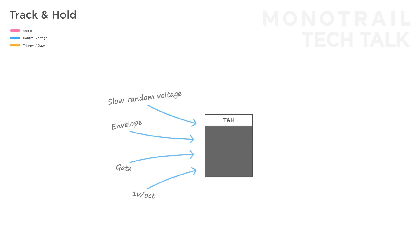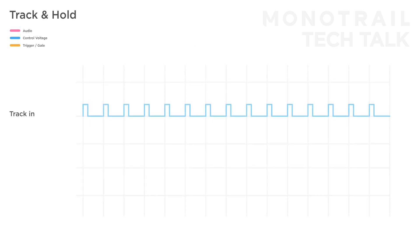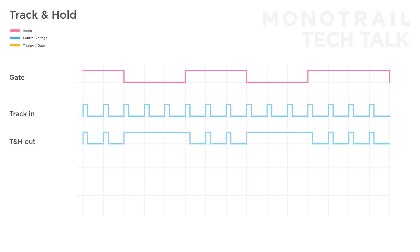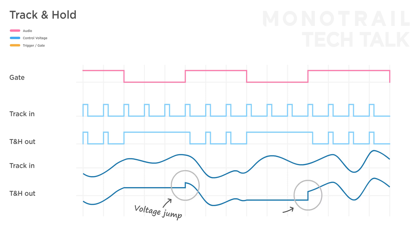Just like with the sample and hold module, a lot of creativity comes from feeding the module different inputs both on the sample and gate side. For example, you can feed a steady clock into the track input and use a random gate to freeze the clock for some time, or send a smooth random voltage to the track input and use the gate to hold a random value before going back to an organic random signal. When going back to the signal the change is immediate, so you can get a voltage jump. In some patches it's worth adding a slew limiter after the output — as long as the slew time is not slower than changes in the tracked signal, it will smooth out these voltage jumps.